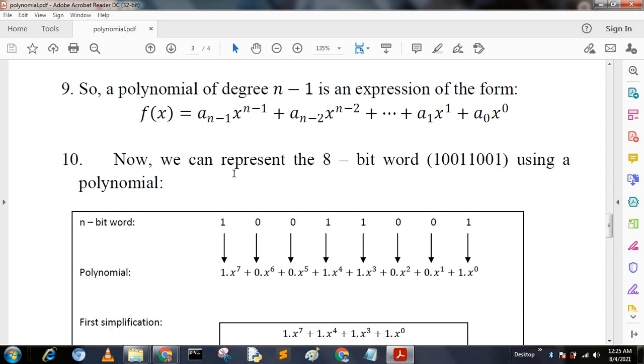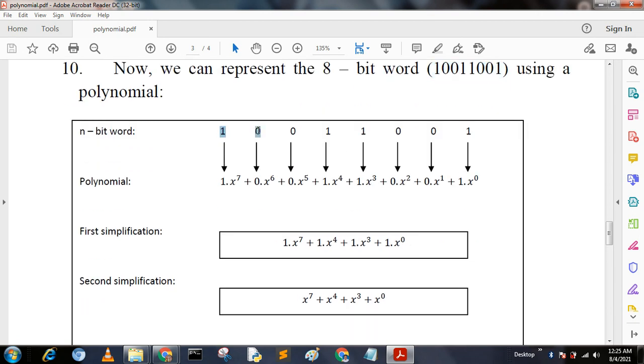Now there is another example of how to write 8-bit into polynomials. This is an example: 8-bit binary format we can write in this way, 10011001. The polynomial representation is 1 times x^7 + 0 times x^6 + 0 times x^5 + 1 times x^4 + 1 times x^3 + 0 times x^2 + 0 times x^1 + 1 times x^0.